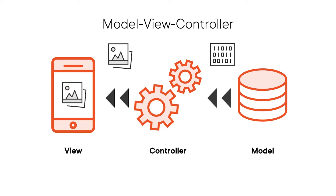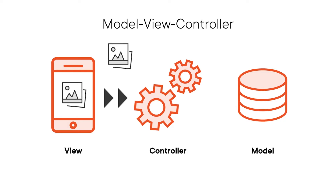And if the user modifies the image — for example by applying a filter — the controller must convert the UIImage to binary data before passing it back to the model. Apple simplifies the Model-View-Controller pattern by merging the view and the controller. SwiftUI relies on a different architectural pattern called Model-View-ViewModel. Let's explore MVVM next.